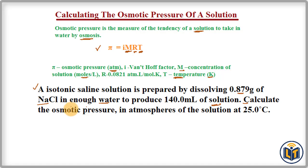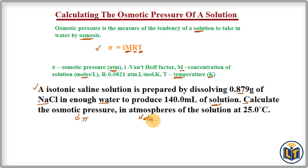The question asks us to calculate the osmotic pressure — that is, the π value in ATM — of the solution at a temperature of 25.0 degrees Celsius.